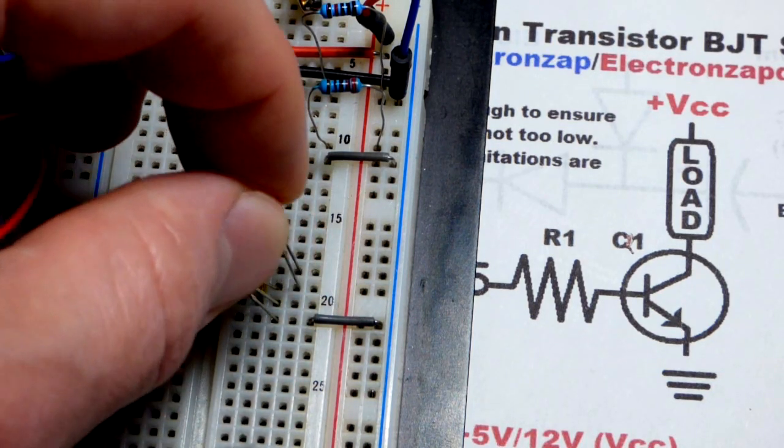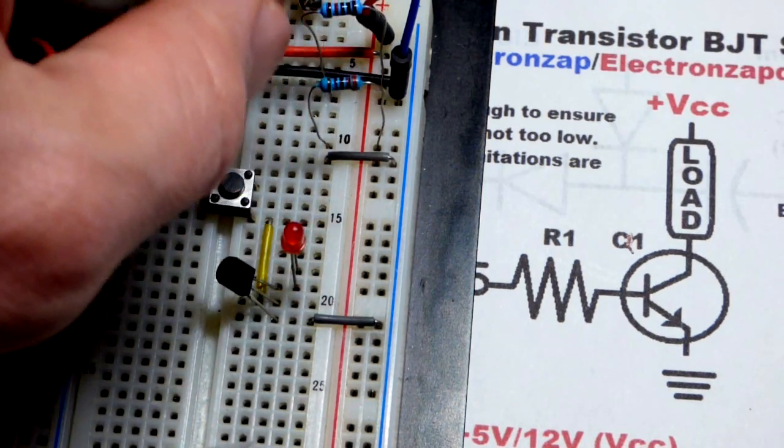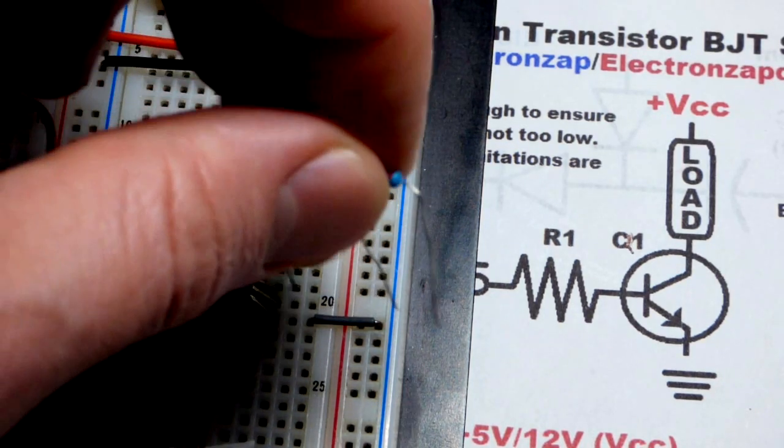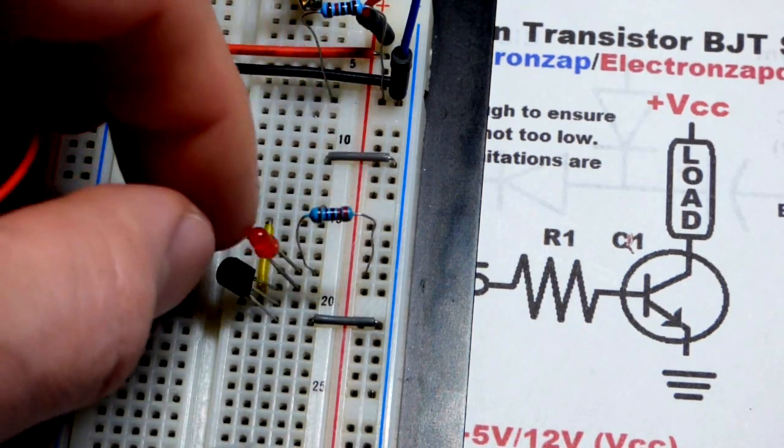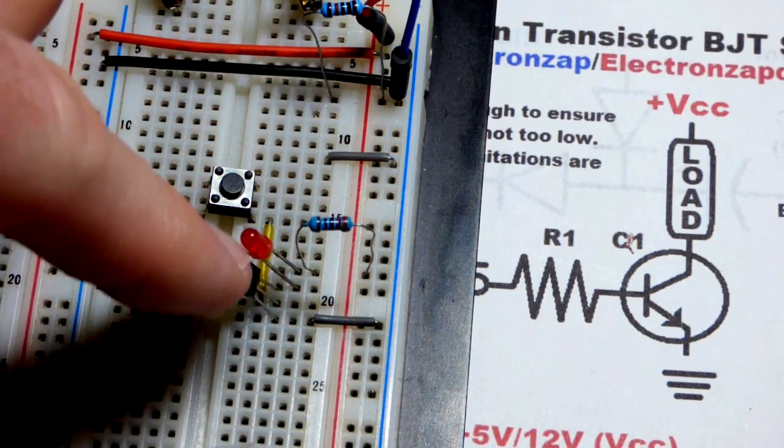And now we're going to grab the 220 ohm resistor, put it to the positive rail, and to the LED. So now you can see these three components are in series.